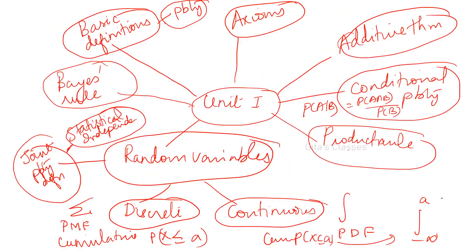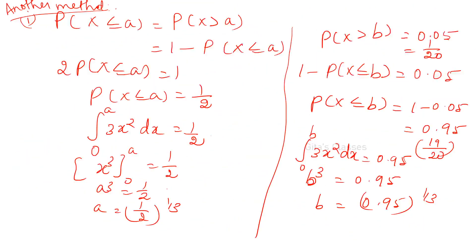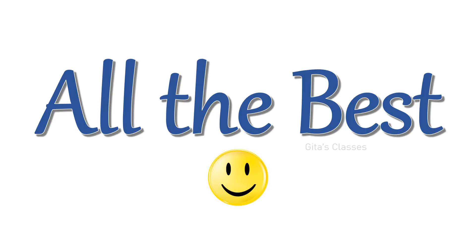So these are the questions you have to practice. All the definitions are important. Discrete and continuous variable definitions are important here; mean, variance, and finding the value of k will come in the second unit. Please practice more problems. Only one more day is left — prepare well. I'll try to complete all five units by tomorrow. All the very best for your exams!